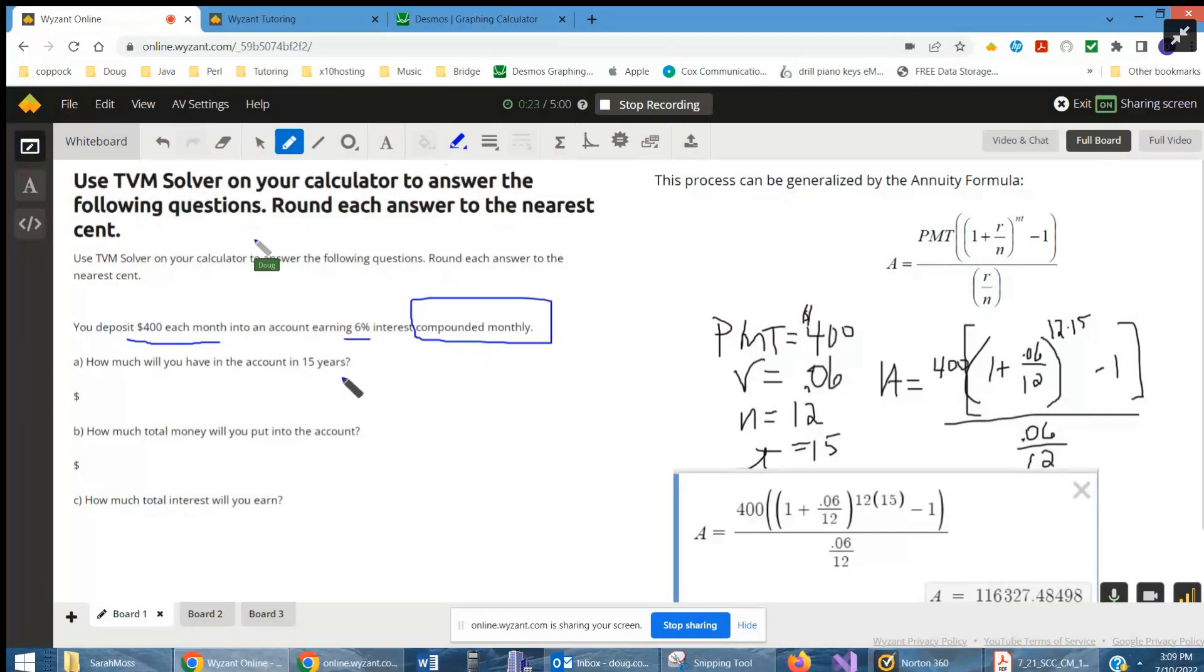And so we want to know how much you'll have in the account in 15 years. And here's the annuity formula where PMT is the amount that you put in each time. R is the interest rate as a decimal.